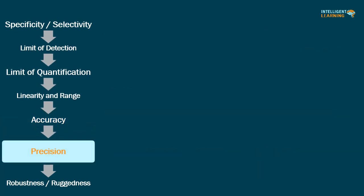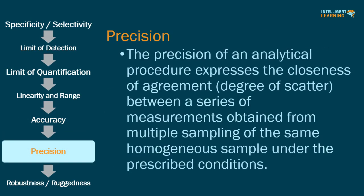The precision of an analytical procedure expresses the closeness of agreement — the degree of scatter — between a series of measurements obtained from multiple sampling of the same homogeneous sample under prescribed conditions. Precision may be considered at three levels: repeatability, intermediate precision, and reproducibility.